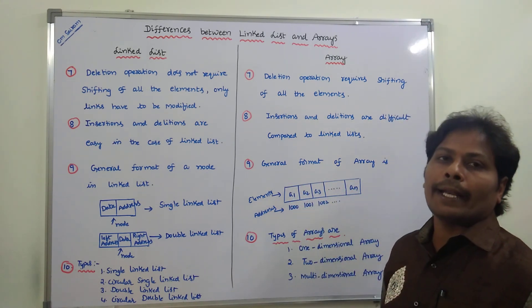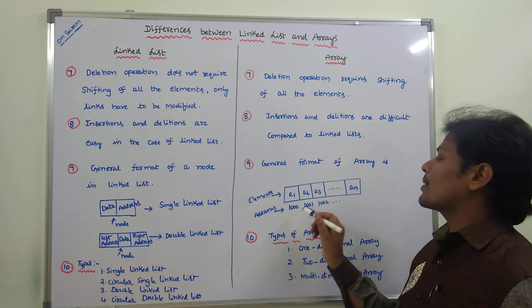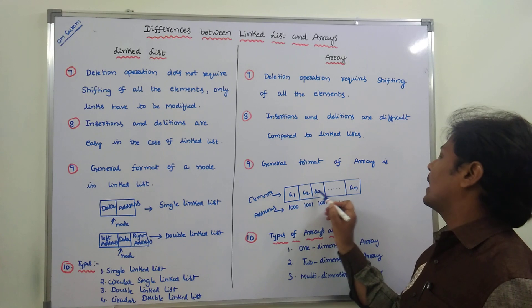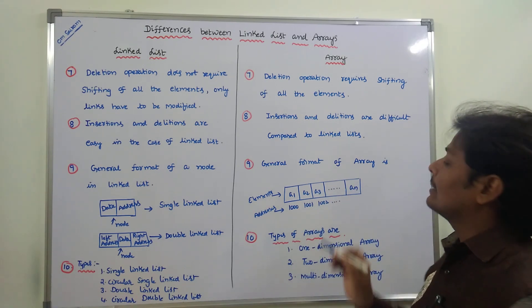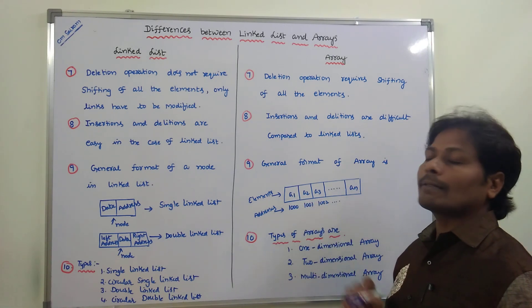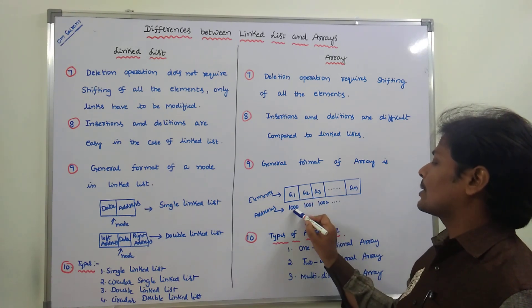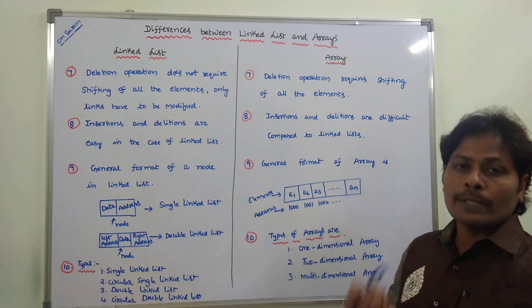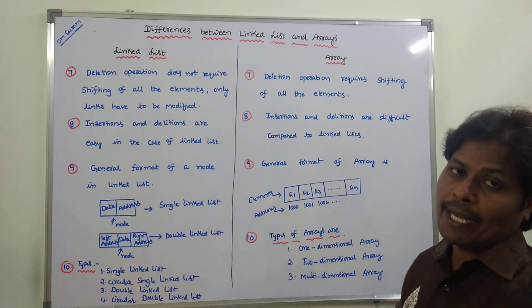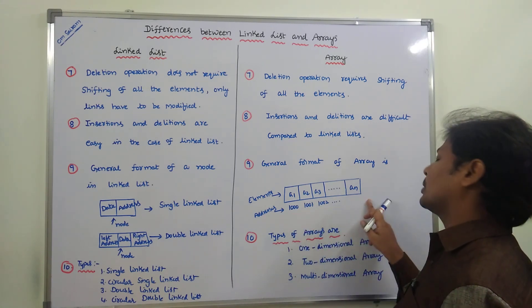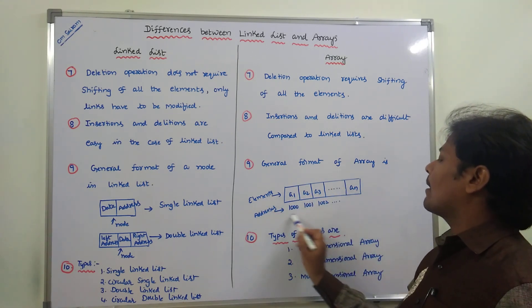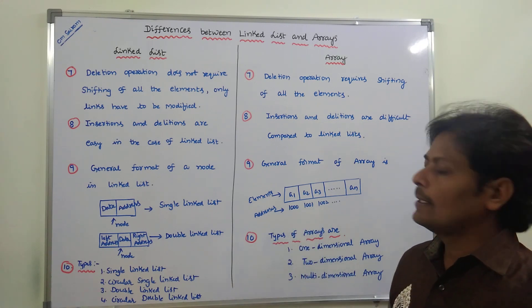The general format of an array: array elements are stored in contiguous memory locations. For example, elements a1, a2, a3 up to an are stored in a character array. The first element's address is called the base address, say 1000. The next element's address is 1001, because it is a character array and every character occupies one byte. These are the elements and these are their corresponding addresses.